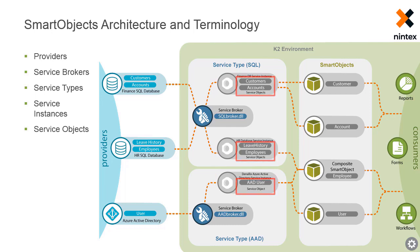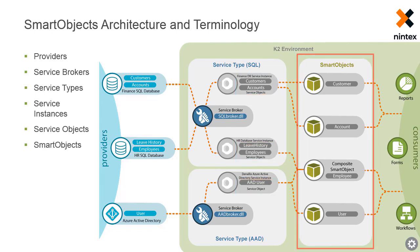Service objects are logical representations of the entities in the provider, as discovered when a service instance is registered or refreshed. They only expose properties and methods from the provider. For example, columns in a SQL database table are represented as properties, while Transact SQL statements like select, update, and delete are represented as methods of a service object. Smart objects expose methods and properties from one or more service objects. A smart object can be auto-generated or manually created in K2 design tools like K2 Designer. Advanced-mode smart objects allow you to create composite smart objects that combine data from multiple data sources in one logical entity.